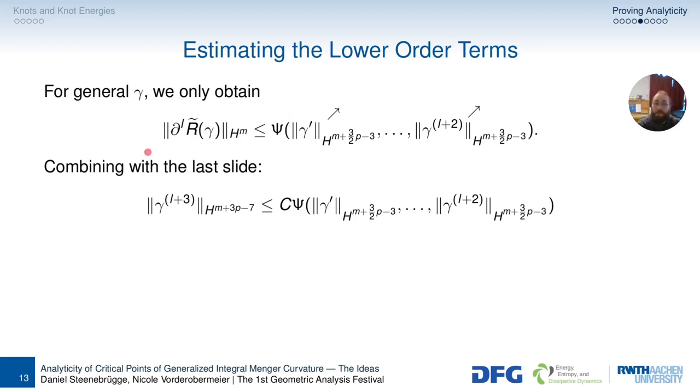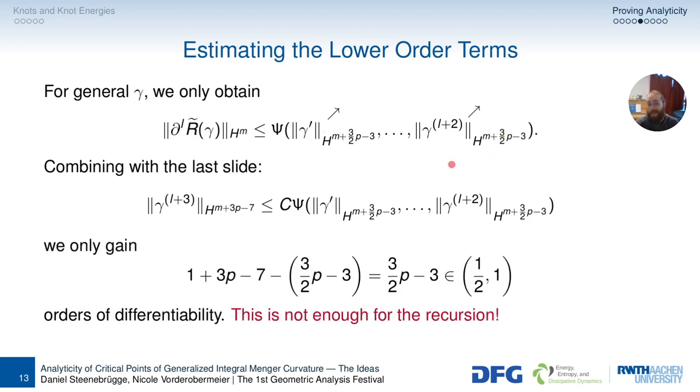And you can try to work that out. So you can bound the remainder term above by some function psi depending on gamma prime up to the L2 derivative of gamma in some other Sobolev norm. And then we plug all this together, and then we say that the L3 derivative of gamma in some strange Sobolev norm is less or equal than this psi of gamma prime up to gamma L2, which looks very nice because we have an L3 here and L2 here. And now we look at the Sobolev norms, and remember that p is between 7 thirds and 8 thirds. And it turns out that doesn't work. Because if you work it out, you see that you get only between one half and one derivative, and you just don't get this one, which you would need for this recursive thingy with the phi and so on. Well, too bad. I promised we would show analyticity, and this obviously does not work.